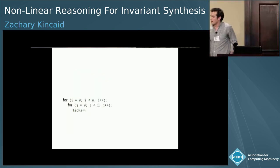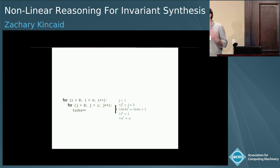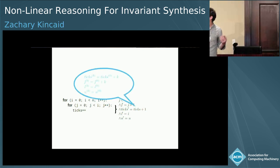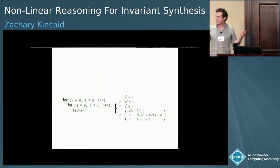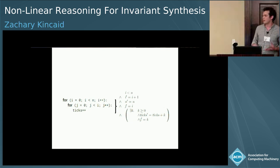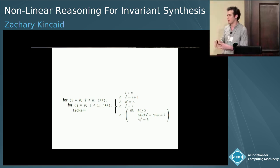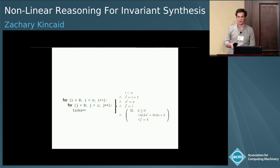Another example: suppose I have a nested loop. I'm going to process this from the bottom up, starting with the innermost loop. The innermost loop already looks like a system of recurrences, so I extract the recurrences, compute closed forms, and I have a summary for the inner loop. Now I can compute a transition formula representing one iteration of the outer loop by expanding this — using the inner loop summary to compute a summary for the body of the outer loop.